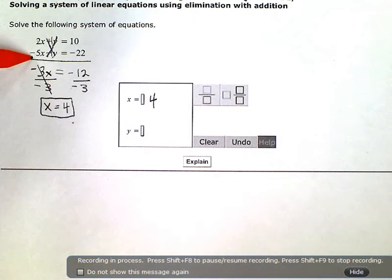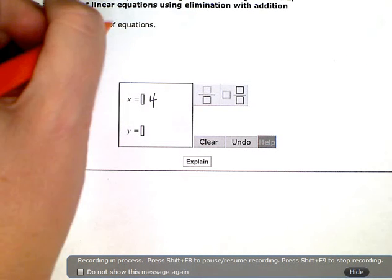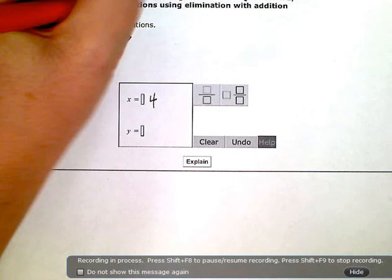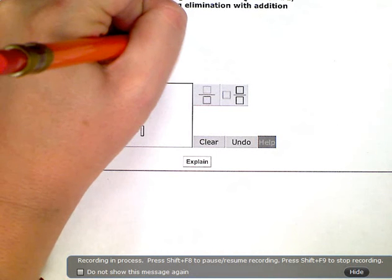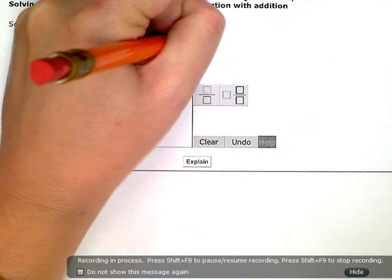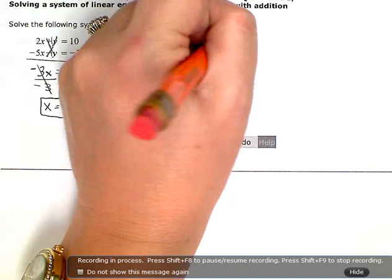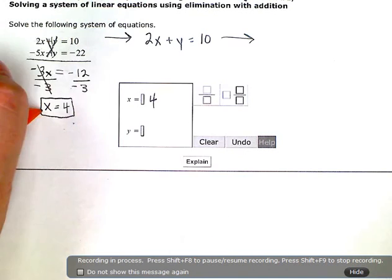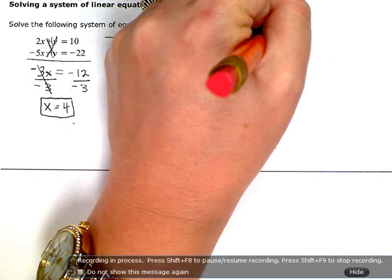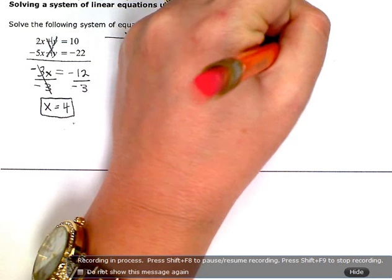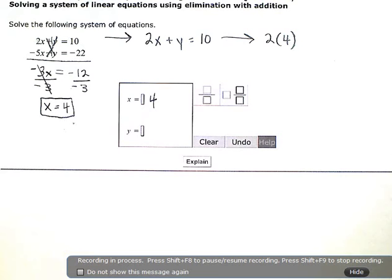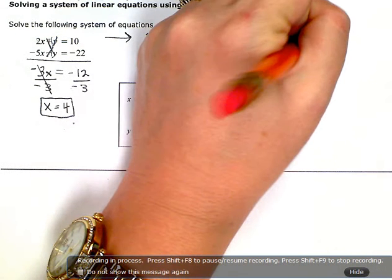I'm going to use the top one. So my top equation here was 2x plus y equals 10. And I'm going to replace the x value with 4. So I'm going to have 2 instead of x, I'm substituting in 4, plus y equals 10.